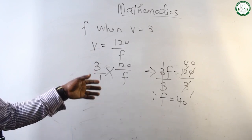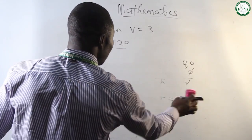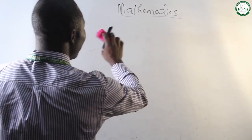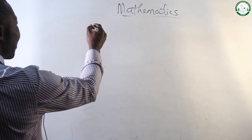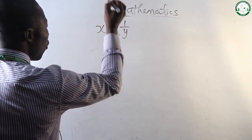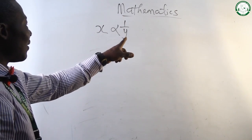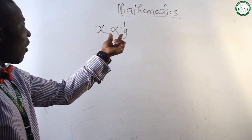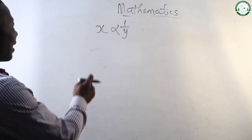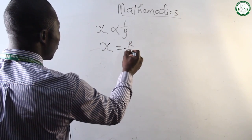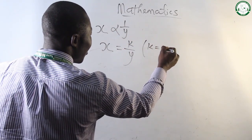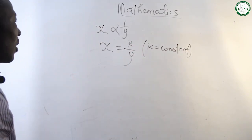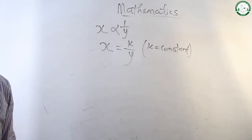In summary, inverse variation means 1 over something — when x varies inversely to y, it means whenever you see 1 over any variable with a variation sign, this is inverse variation. The next step is to change it to x equals k over y, because k is the factor affecting this variation that makes it equal, and we call it a constant. Do the assignment and have a nice day. Thank you, class.